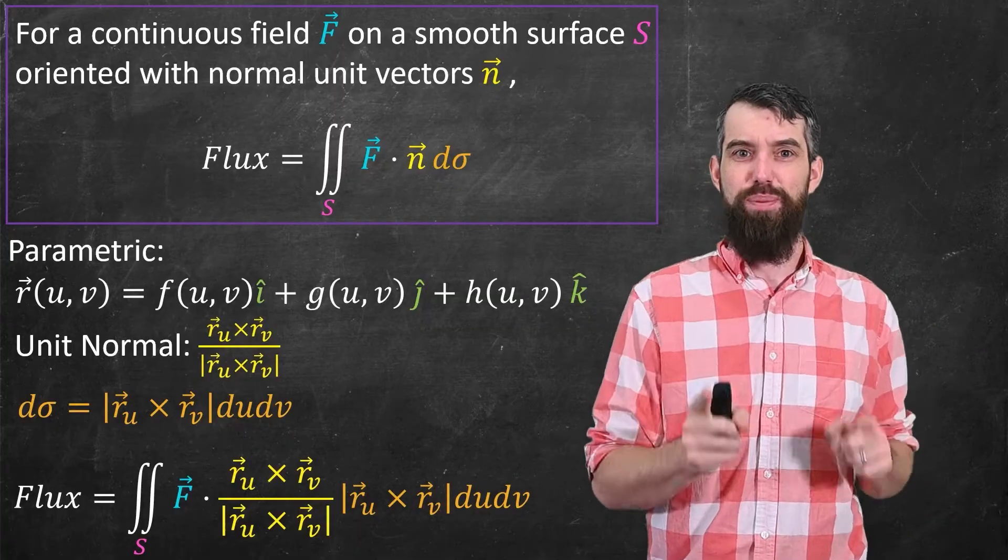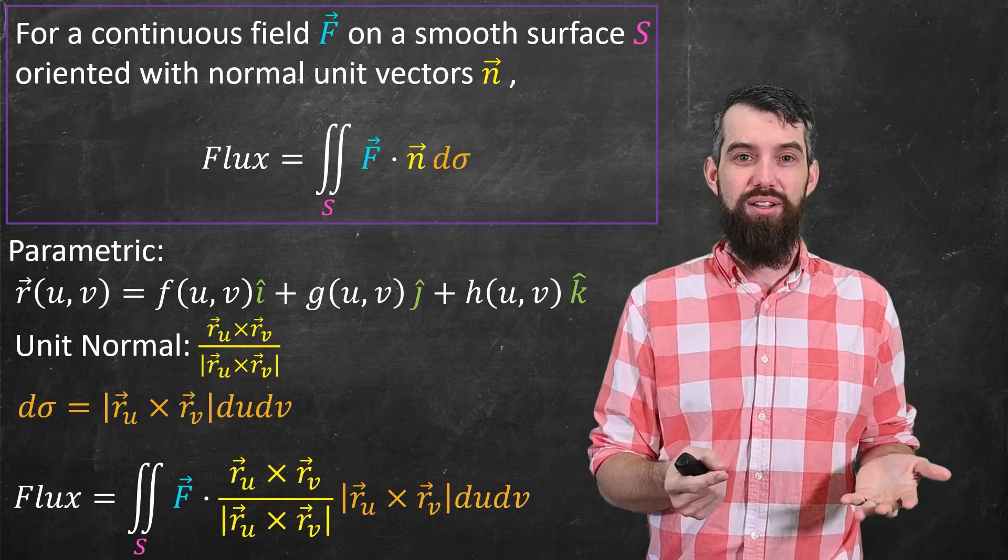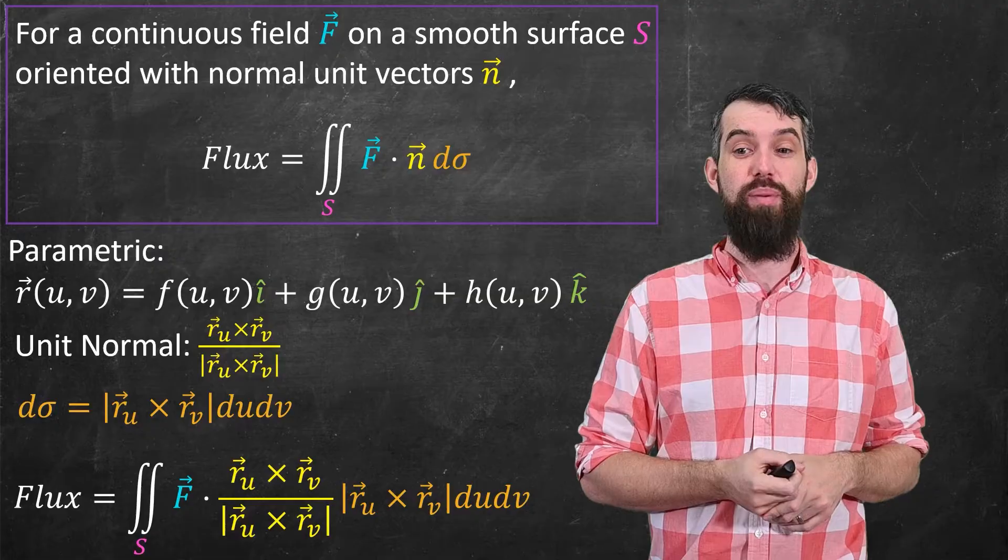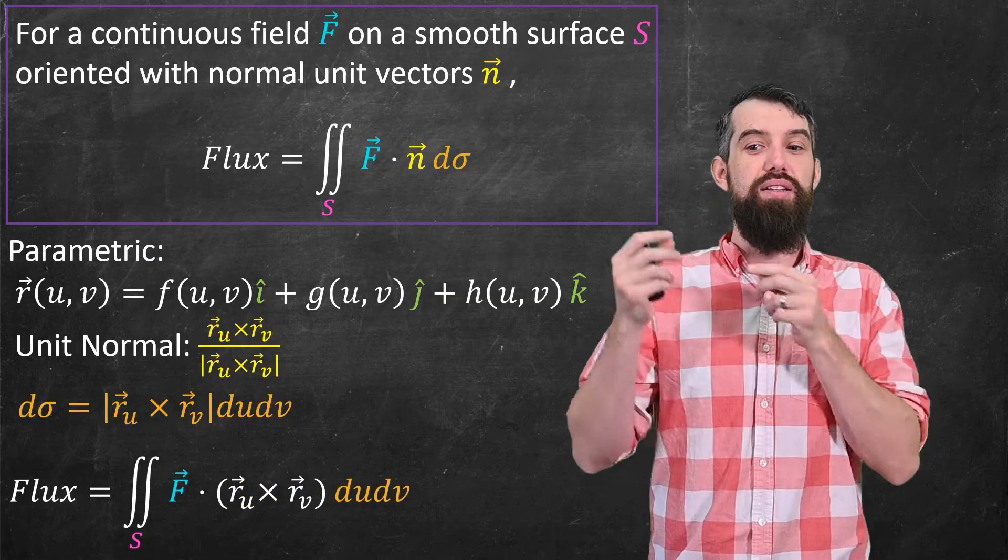This looks messy, but at least there's a simplification. I see that there's a length of that r u cross r v in both cases, so I can cancel that from the top and the bottom and just simplify it just a little bit more to f dot r u cross r v du dv.